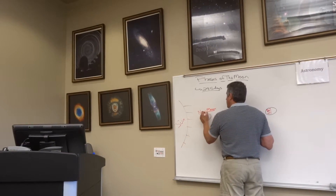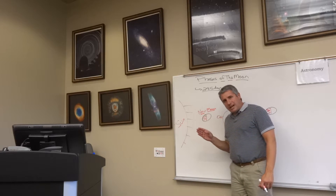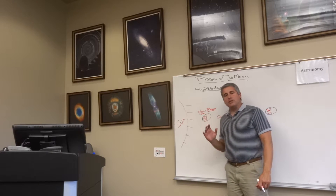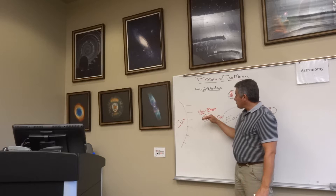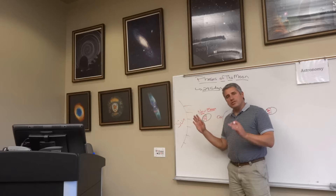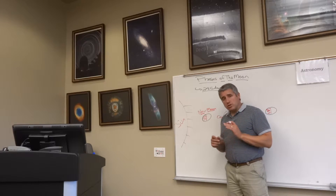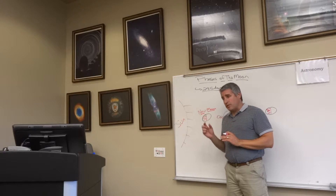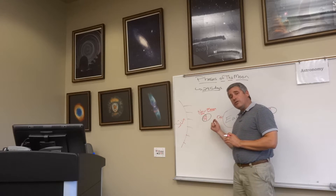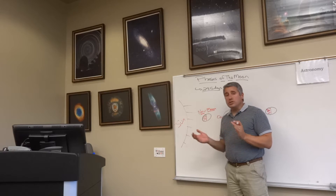Interestingly, what can happen during a New Moon? The Moon, if it's directly aligned — and this happens about twice a year — can actually pass right in front of the Sun, creating a situation where the Sun's light is blocked. We know that as a solar eclipse. A solar eclipse happens about twice a year for a few folks on Earth who sit in that shadow, and it will happen during New Moon, and only New Moon.